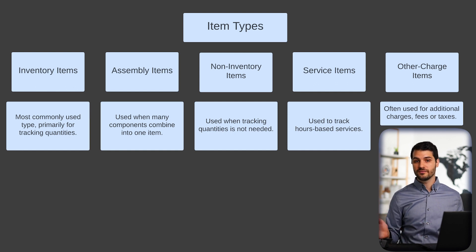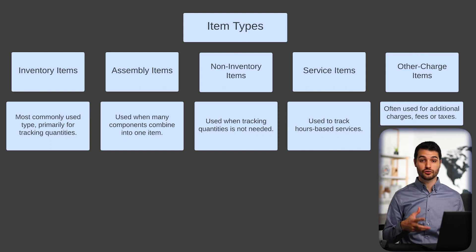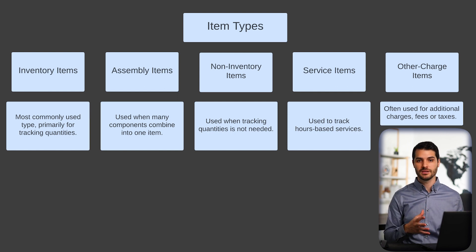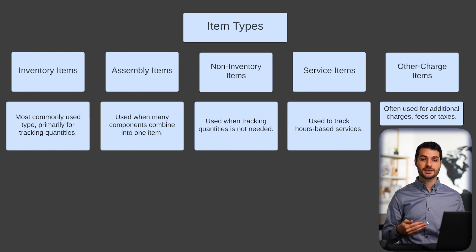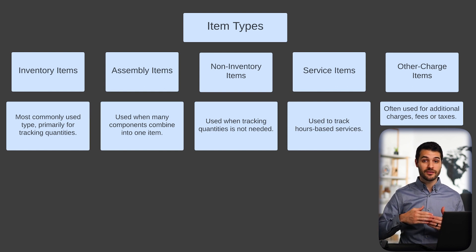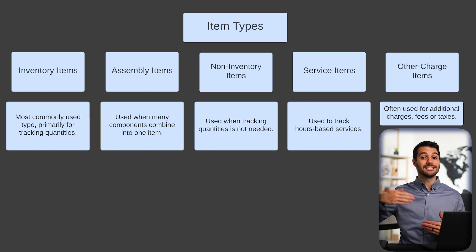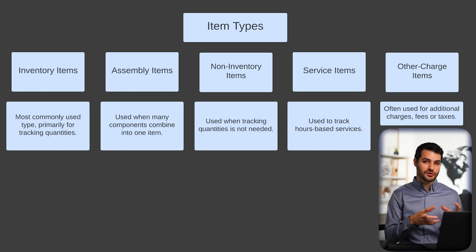Those are not all of the different item types — there are also things like discounts, markups, and item groups. But these are some of the core ones very commonly used across many industries. These are the basics, and you can see how they reflect and relate to your own company's items. When you're first setting up and implementing NetSuite, it's very important to make sure that your item types are nailed and appropriate for your company, including thinking about where your company will grow and what additional items you might have in the future.